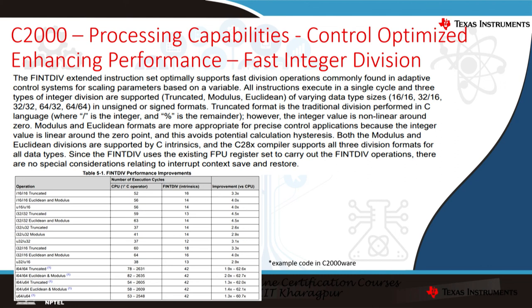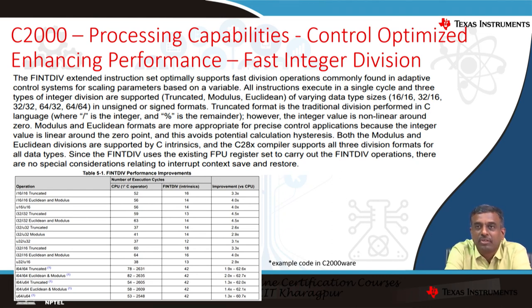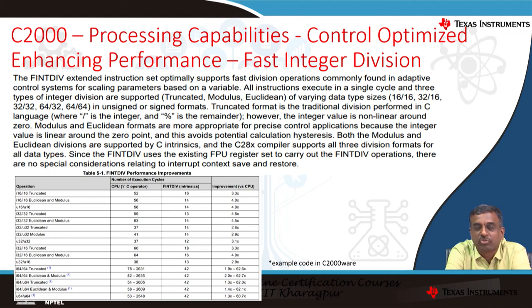Fast integer division supports multiple division types — truncated, modulus, and Euclidean — and varying data sizes: 16-bit by 16-bit, 16-bit by 32-bit, 32-bit by 32-bit, and more. This addition reduces cycle consumption for division by approximately 3x: a typical division taking about 60 cycles on C28X is reduced to 14–15 cycles using fast integer division. Enabling it is easy through compiler intrinsics, which automatically replace code with fast integer division instructions. All these added capabilities are supported with examples in C2000ware.